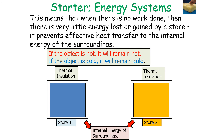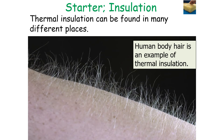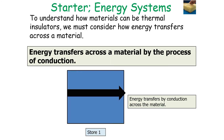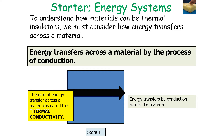Thermal insulation will prevent effective heat transfer to the internal energy store of the surroundings — so if an object is hot, it will remain hot, and if it is cold, it will remain cold. Thermal insulation can be found in many different places, such as double glazing, cavity wall insulation, human body hair, and coats and jumpers. To understand how materials can be thermal insulators, we must consider how energy transfers across a material by the process of conduction. The faster the energy transfer, the better the thermal conductor; the slower the energy transfer, the better the thermal insulator. The rate of energy transfer across a material is called thermal conductivity, and all materials have a value of thermal conductivity.